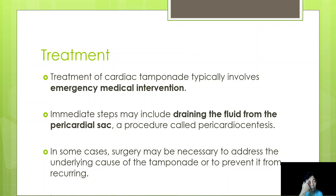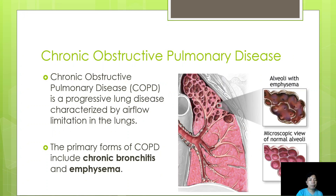Treatment of cardiac tamponade typically involves emergency medical intervention because it can be fatal. The usual procedure is immediate drainage of the pericardial sac — called pericardiocentesis. In some cases, surgery may be necessary to address the underlying cause or to prevent recurrence.